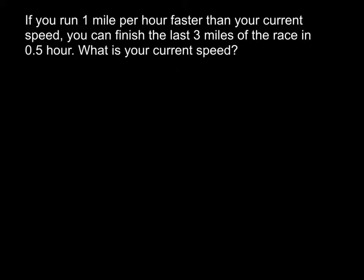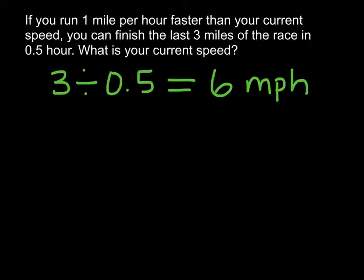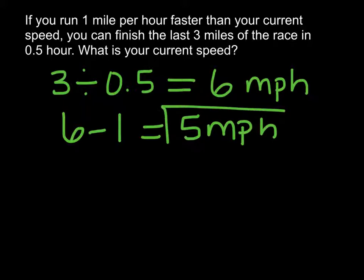We have all of the information we need to calculate our new speed. We know that we can run the last 3 miles in half of an hour. So let's divide 3 by 0.5, which gives us an answer of 6. So our new speed is 6 miles per hour. We know that our new speed is 1 mile per hour faster than our current speed. So we'll take our new speed, subtract 1, and find that our current speed is 5 miles per hour.